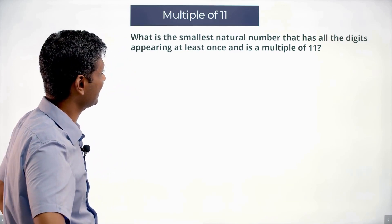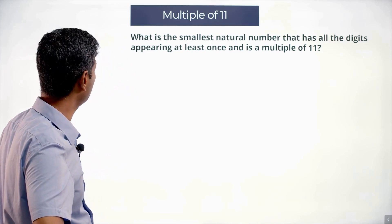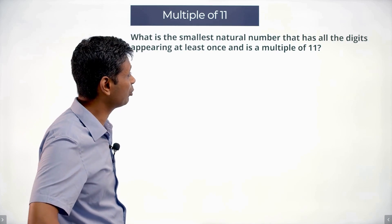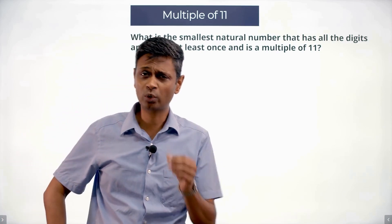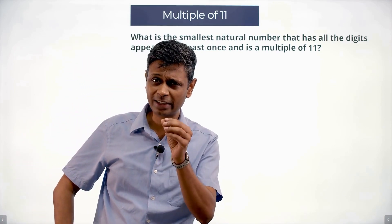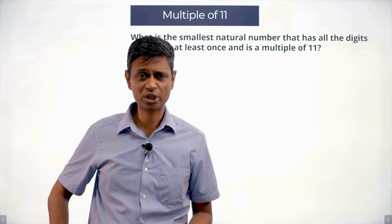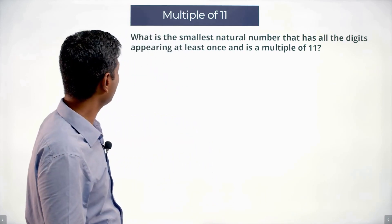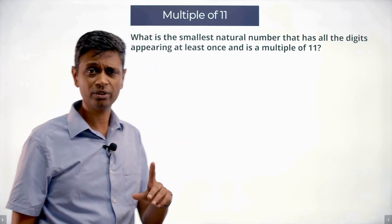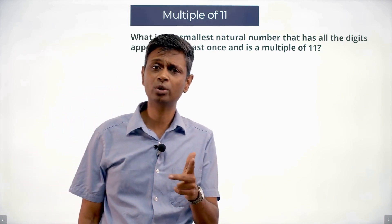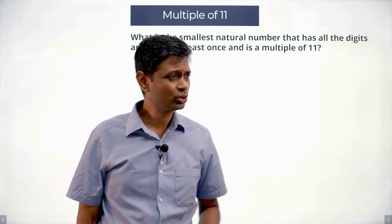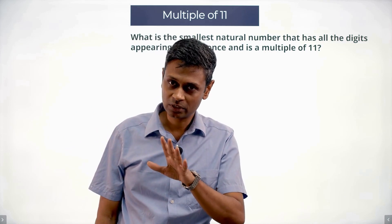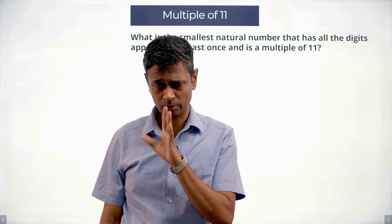What is the smallest natural number that has all the digits appearing at least once and is a multiple of 11? I want a natural number that has all the digits: 0, 1, 2, 3, 4, 5, 6, 7, 8, 9. So this number is at least a 10-digit number, and I want the smallest of those possible.